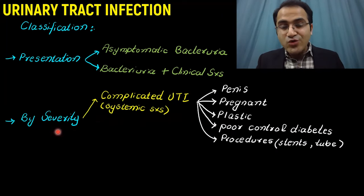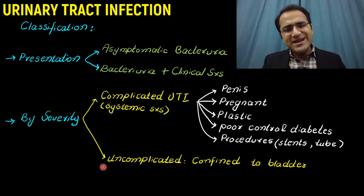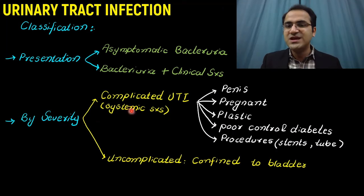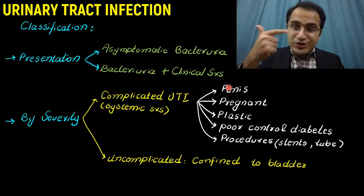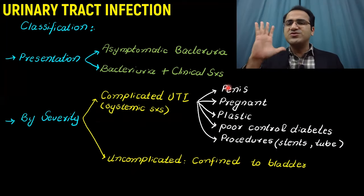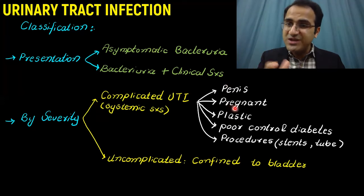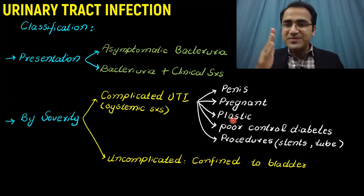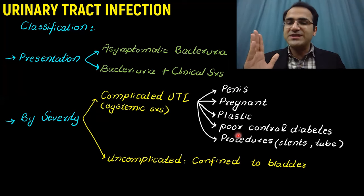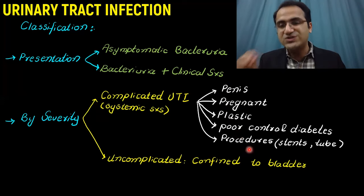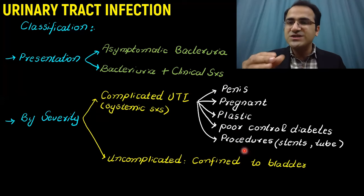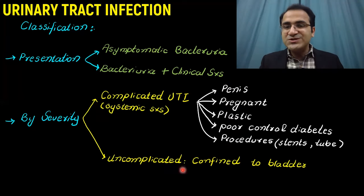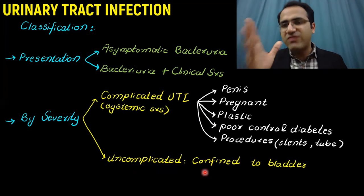UTI can be classified into complicated and uncomplicated based on severity. Complicated UTI has systemic manifestations. Remember the P's: if a male comes with UTI, consider it complicated. If the patient is pregnant, treat it as complicated. Catheter-associated UTI is complicated. If the patient has diabetes, any stents, or tubes in place in the urinary tract, that is a complicated UTI. If the P's are absent, it is uncomplicated UTI confined to the bladder.